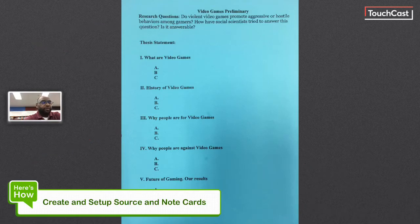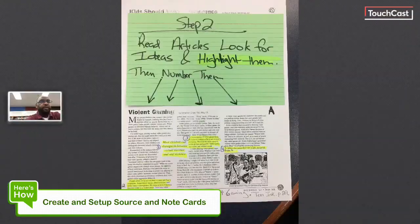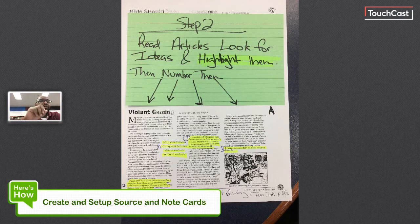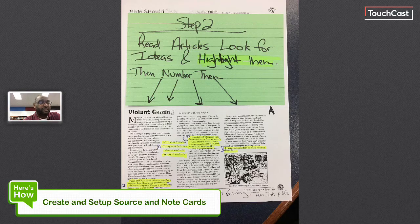Once our article is coded, our next step is to begin reading it. You're gonna read the article, go through and highlight ideas that fit the research criteria — and that research criteria is on your outline. As you find them, you're highlighting and numbering them. The goal is to make sure your article is not completely highlighted — highlighters are tools, not toys — so use them responsibly.